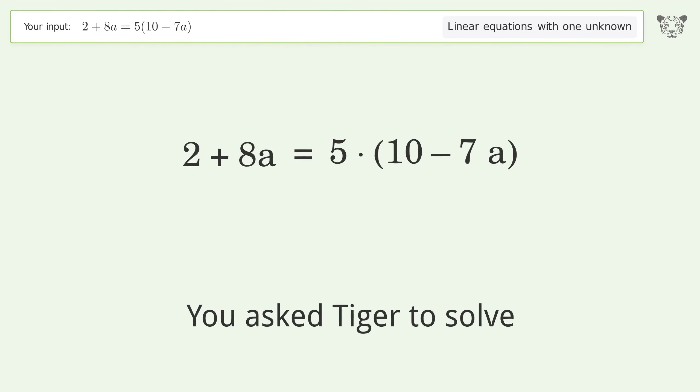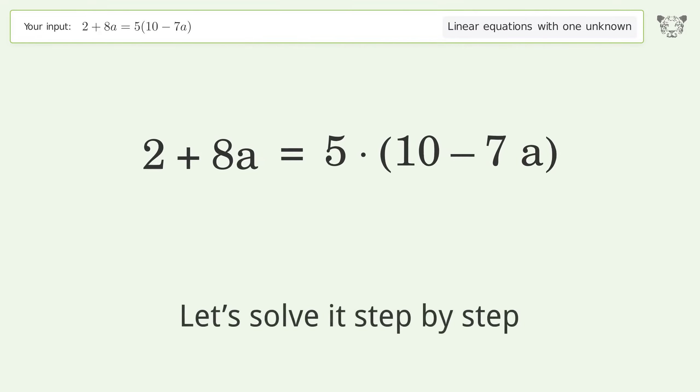You asked Tiger to solve this, which deals with linear equations with one unknown. The final result is a equals 48 over 43. Let's solve it step by step. Simplify the expression.